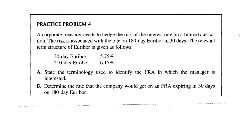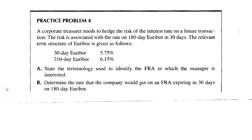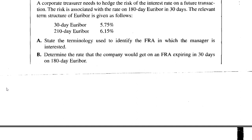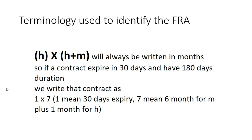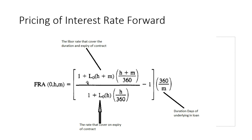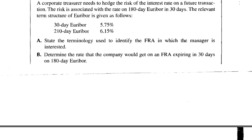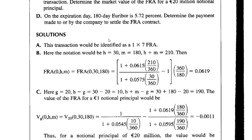Part B asks to calculate the FRA rate expiring in 30 days based on the 180-day EURIBOR. Using the pricing formula, we need the 210-day EURIBOR in the numerator and the 30-day EURIBOR in the denominator. Substituting: [1 + 0.0615 × (210/360)] divided by [1 + 0.0575 × (30/360)], minus 1, multiplied by 360/180. This gives an FRA fair value of approximately 0.0619, or 6.19%.